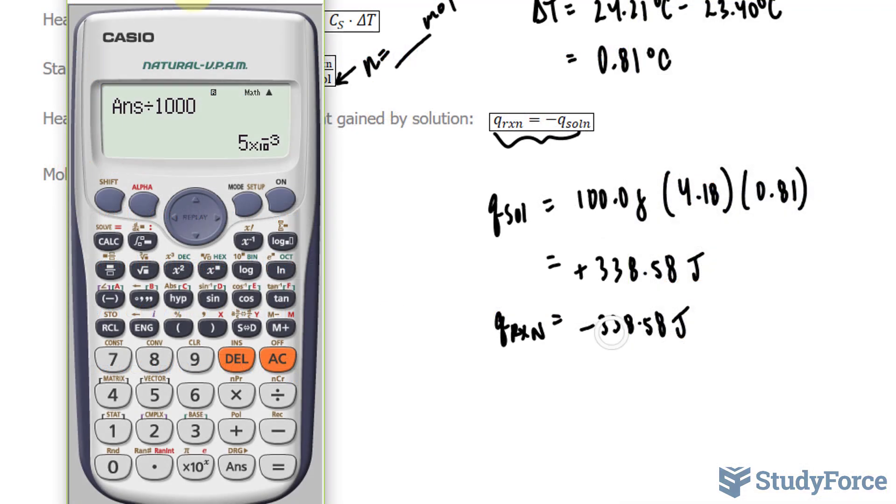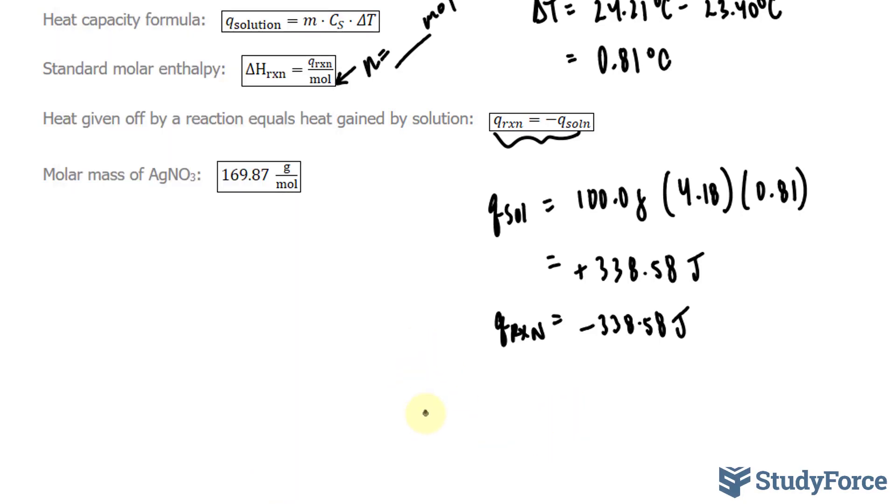I'll take negative 338.58 and divide it by what I see. Negative 338.58 divided by the number gives us negative 67,716. So delta H_RXN equals negative 67,716 joules.